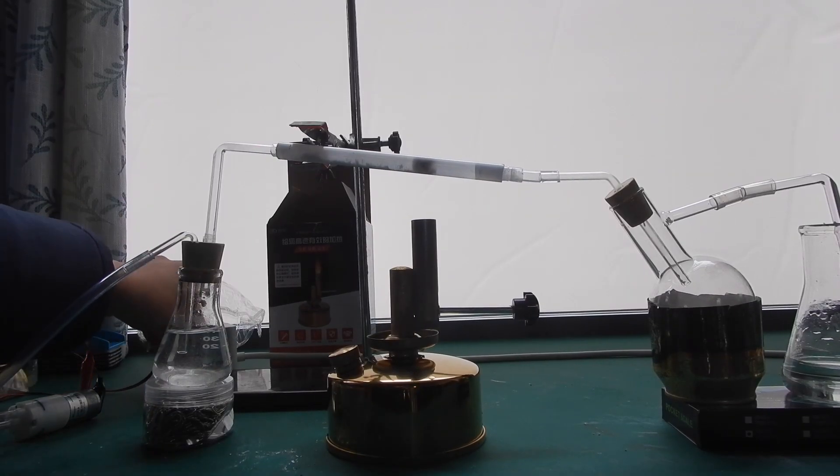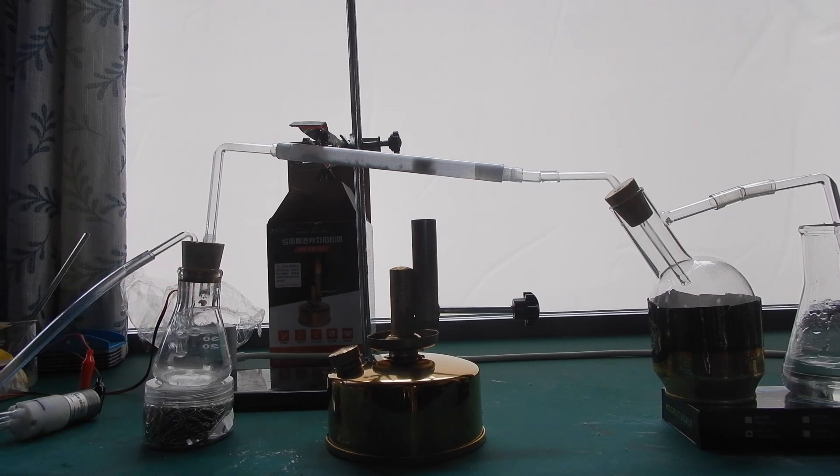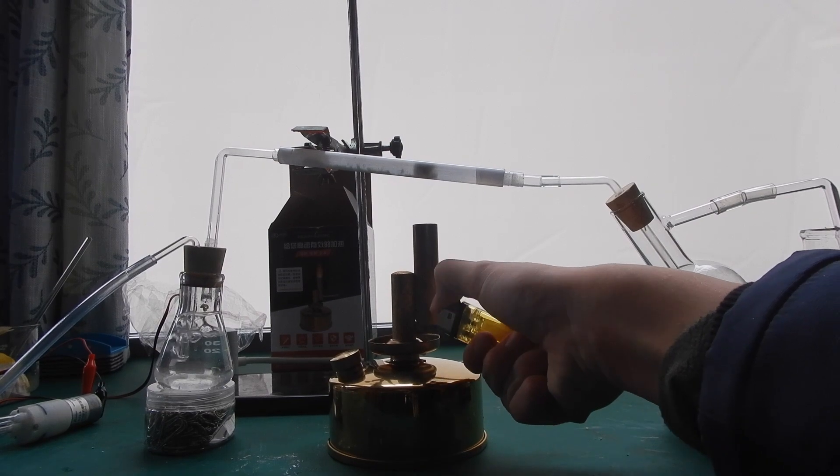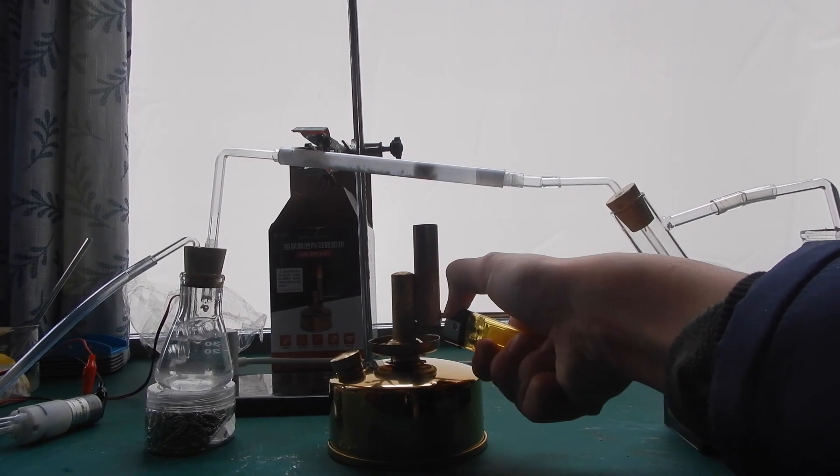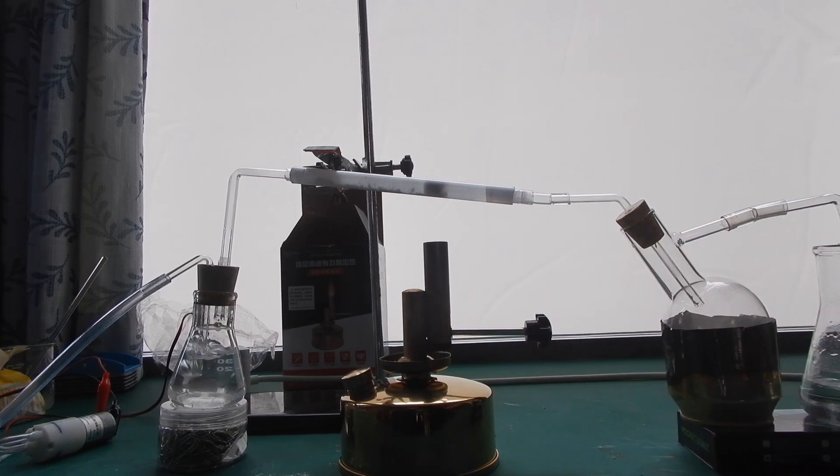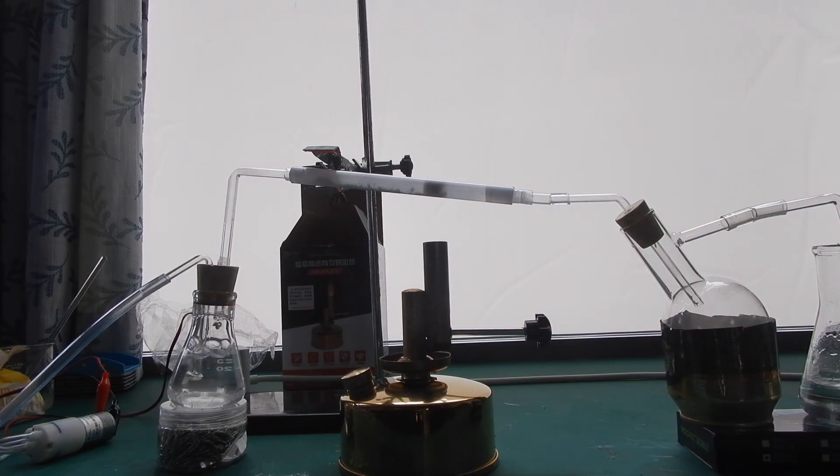Now we can start the reaction. Switch the pump on and heat the catalyst. I used an alcohol burner instead of the alcohol lamp, since an alcohol burner can do something like 1000 degrees, but an alcohol lamp can only handle around 500 degrees. You can also use a butane torch.